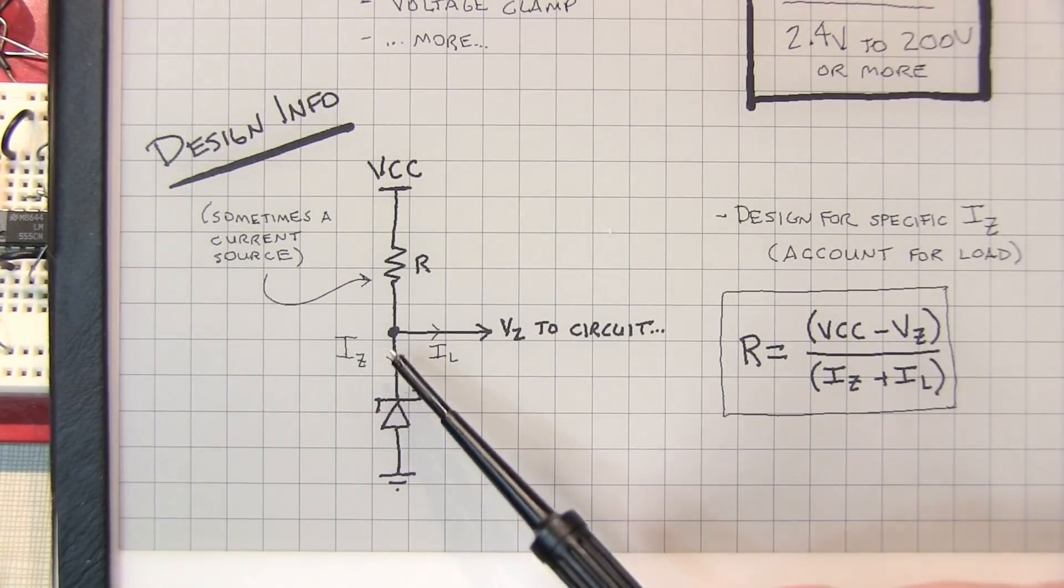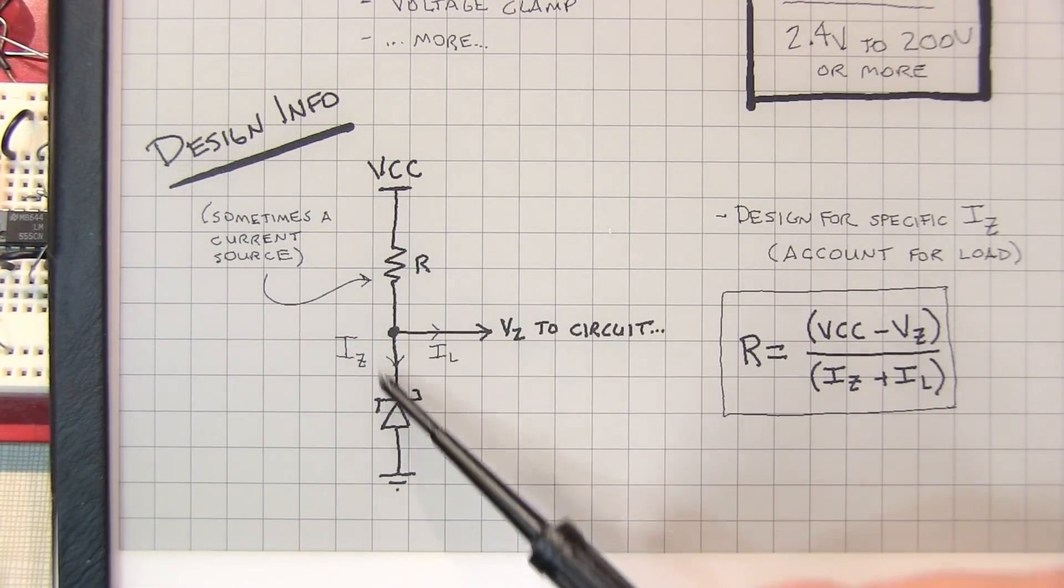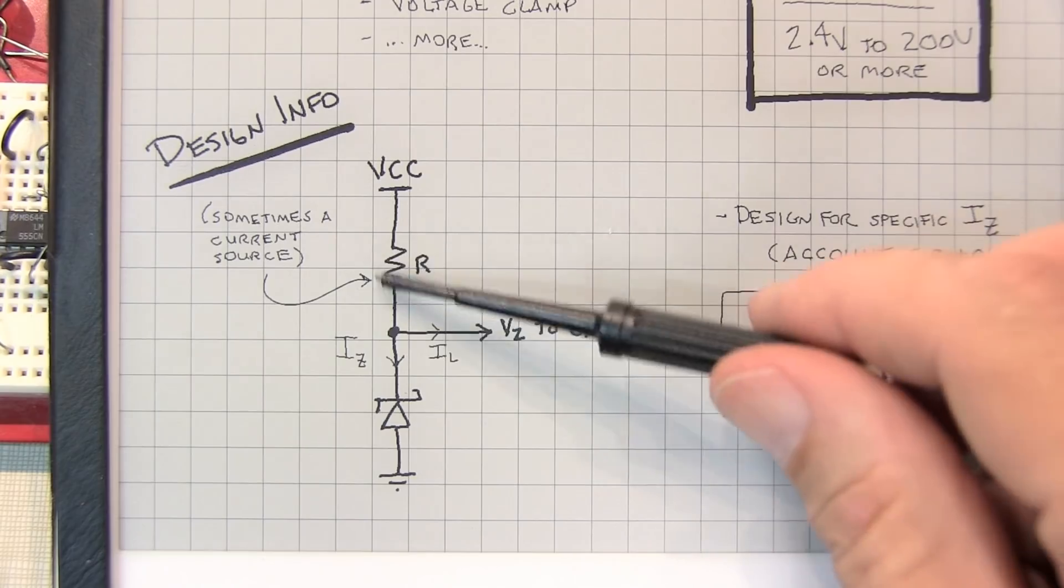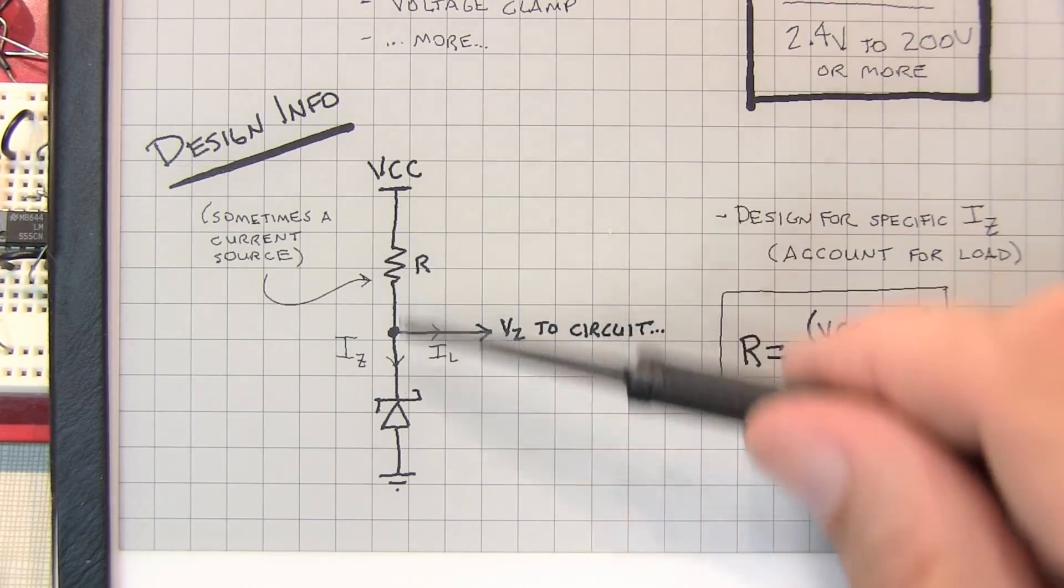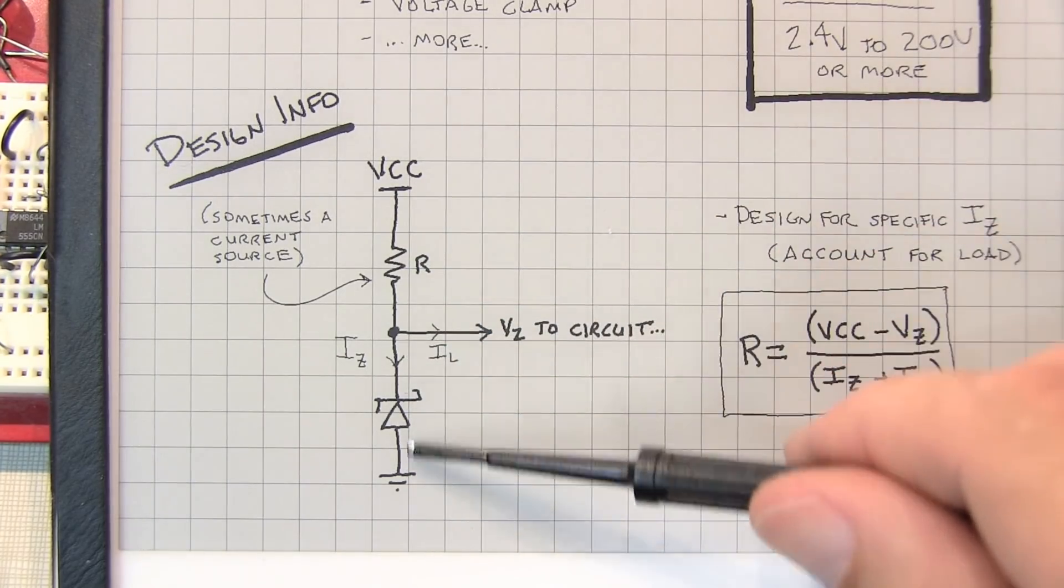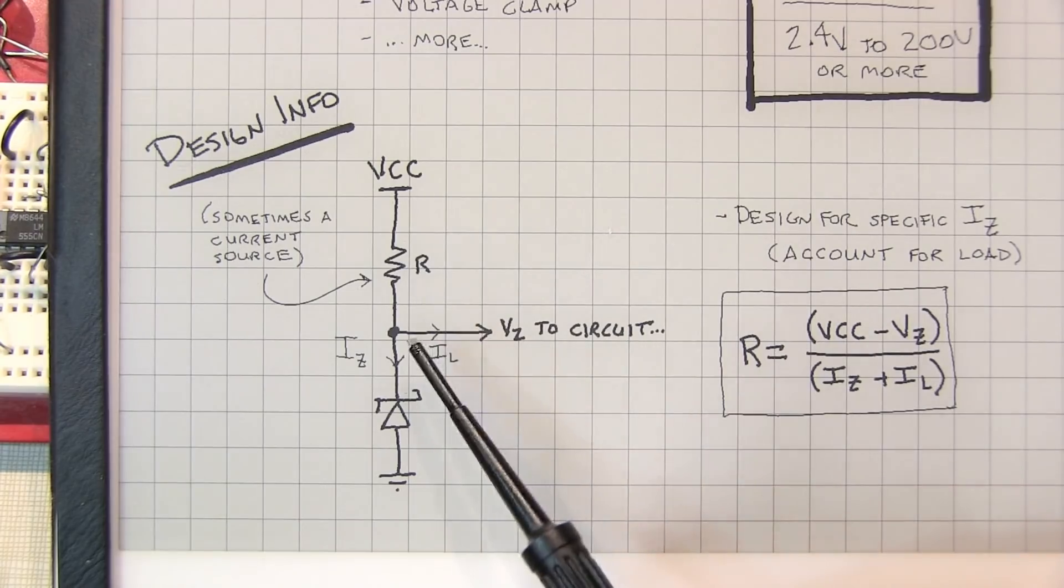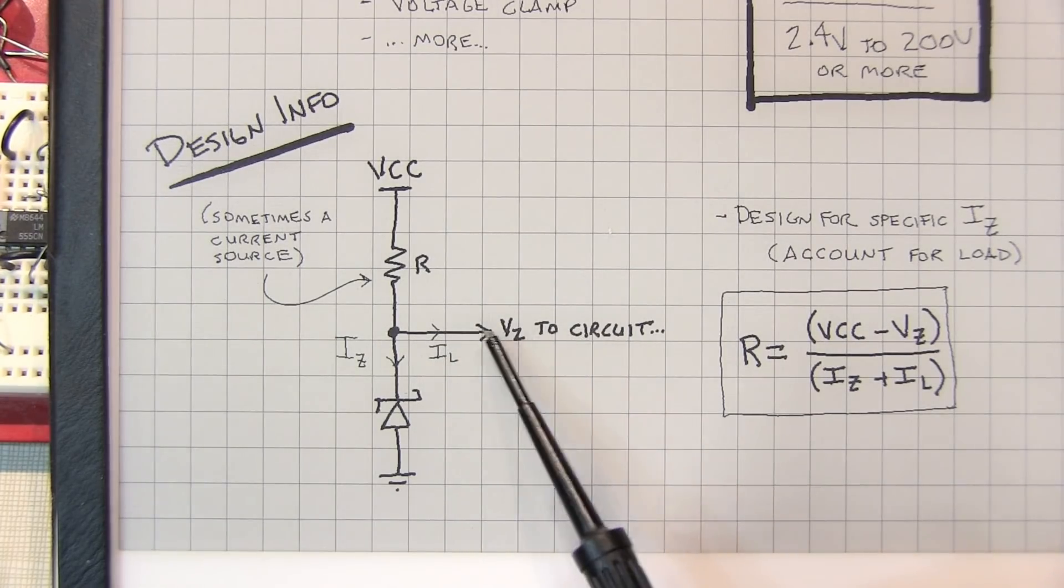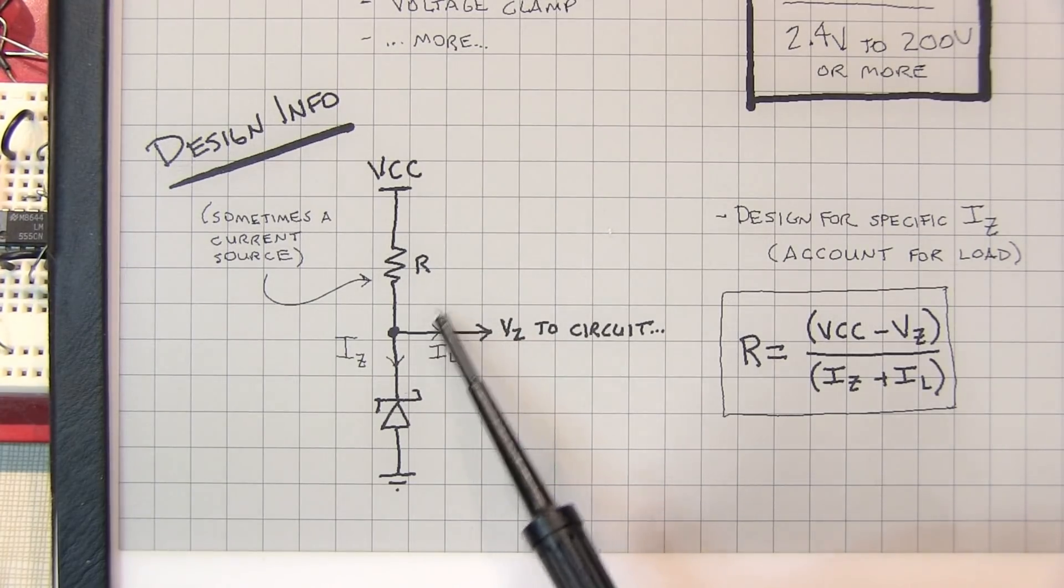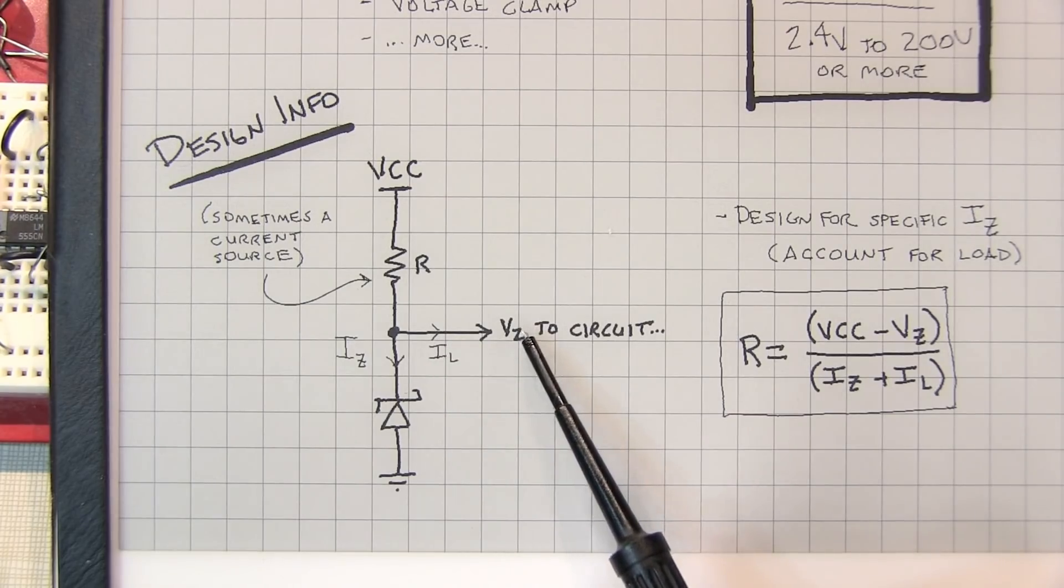Each Zener diode is going to be specified to operate at a particular Zener current, or reverse current, through the Zener diode. That's where the Zener voltage is specified to operate. You're going to have to pick a resistor value that when the circuit is powered up, you're going to establish that Zener current through the diode. You have to take into consideration that whatever circuit you're using beyond that, you've got to figure out how much current is going to be drawn by that circuit.